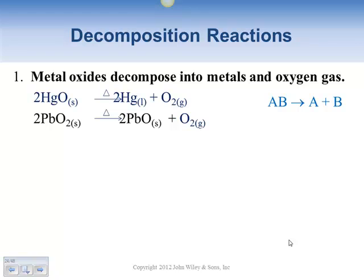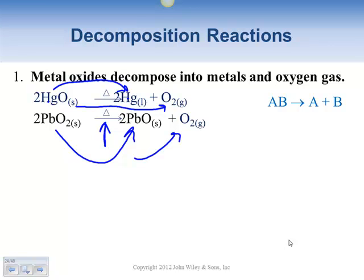Next is decomposition reactions — where you have a compound and it breaks down into something else. Usually decomposition reactions take a little bit of activation energy to get started, then break down into something plus a gas. In this case we have mercury and lead oxides — metal oxides that decompose into the metal and then the gas comes off. Mercury goes to mercury metal giving off oxygen gas, and we balance with two mercuries and two oxygens since oxygen is diatomic. The other example has a lead oxide turning into a different version of lead oxide and giving off oxygen gas.